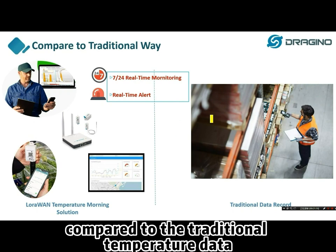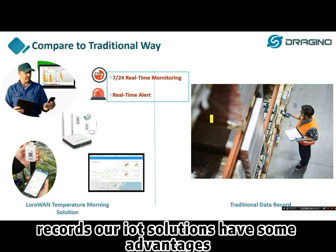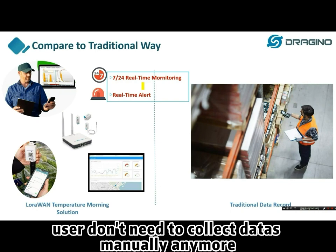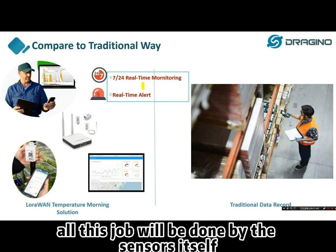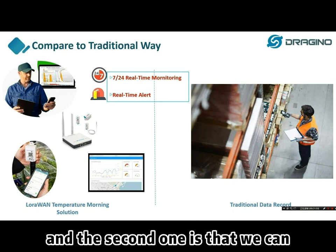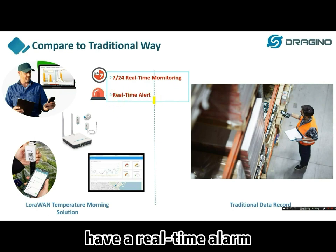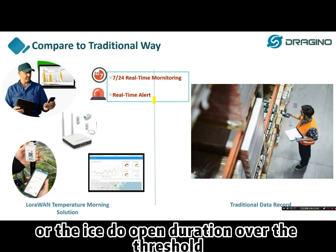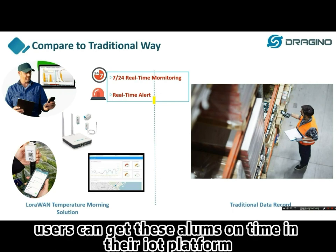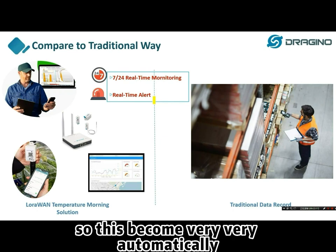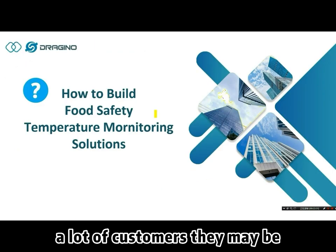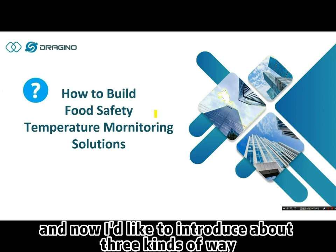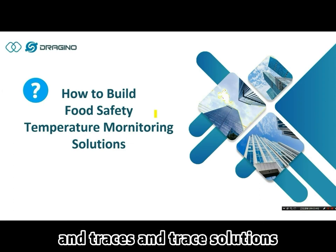Compared to traditional temperature data collection, our IoT solution has clear advantages. First, we provide 24/7 real-time monitoring — users no longer need to collect data manually, as it is all done automatically by the sensors. Second, users receive real-time alarms when the temperature exceeds the threshold or a door has been open too long. Users can receive these alarms on time via their IoT platform, apps, or email. This is very automatic and saves a lot of cost. Many customers may be interested in how to build up these temperature monitoring solutions, and I will now introduce three kinds of solution choices.